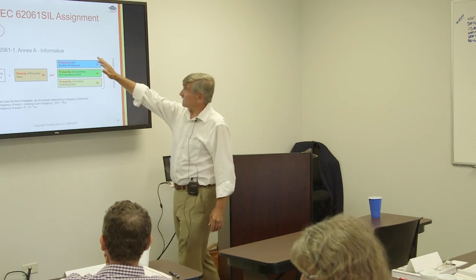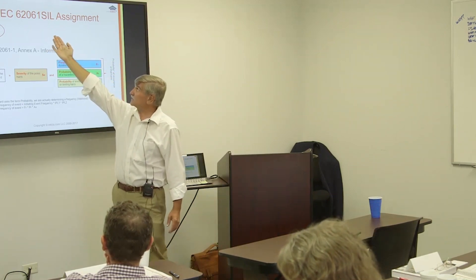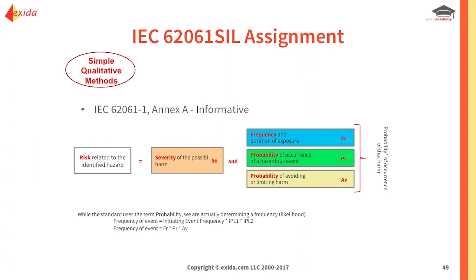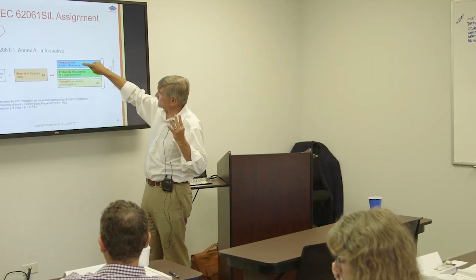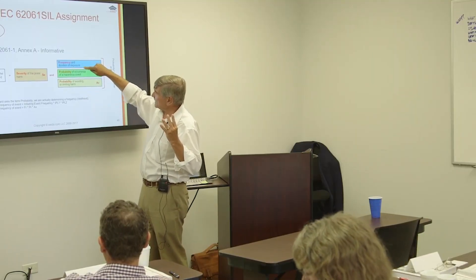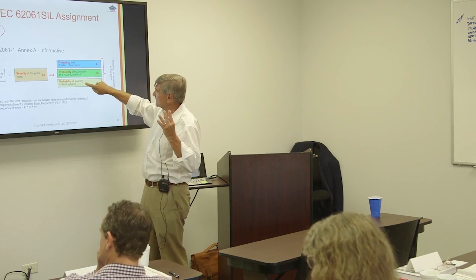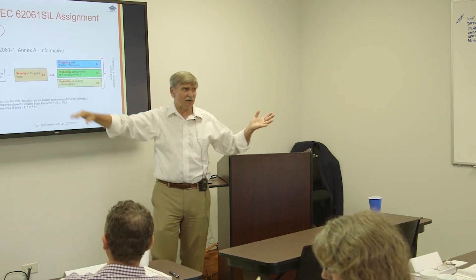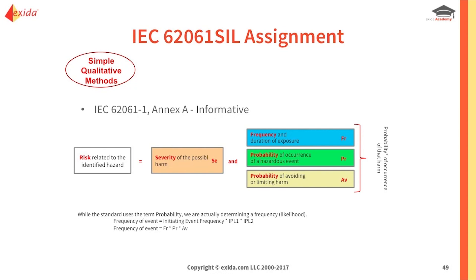For example, in the machine safety standard IEC 62061, there's a simple qualitative method where you estimate the severity as the first parameter, then the frequency, then the probability of occurrence of the hazardous event, and the probability of avoiding the harm. So this is basically occupancy, this is likelihood, this is probability of avoidance — it's essentially the same method as the risk graph when you swap the words around. And they have a scoring system.